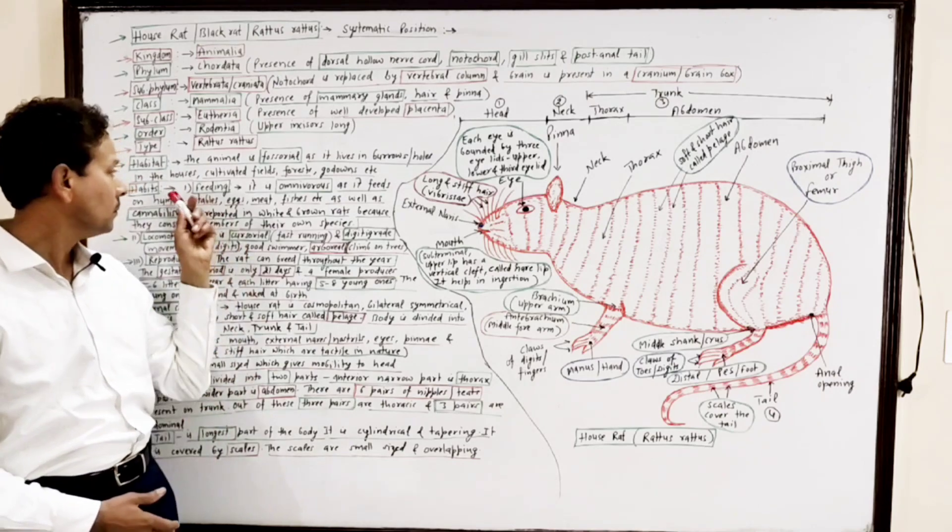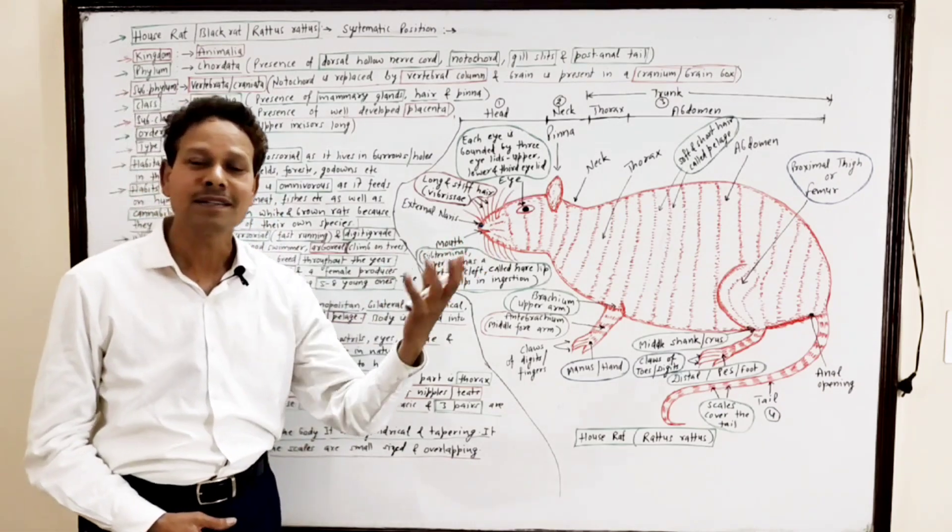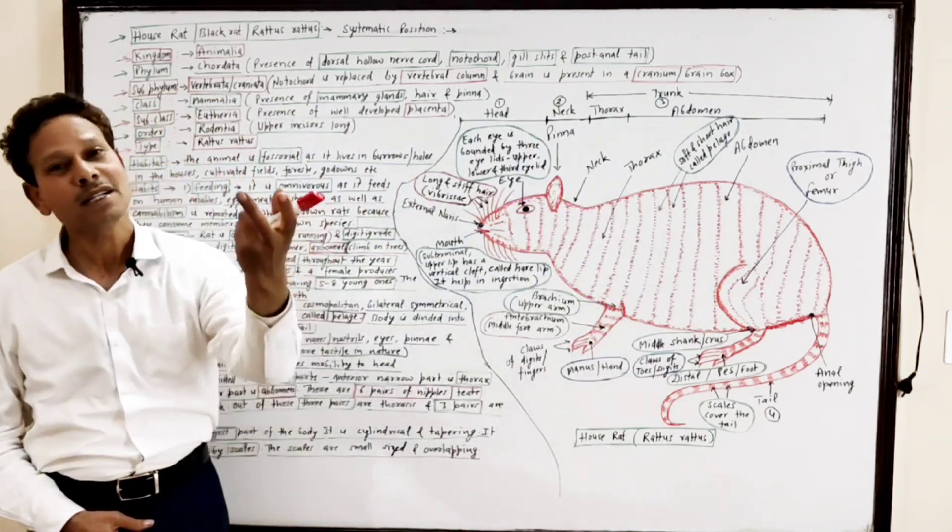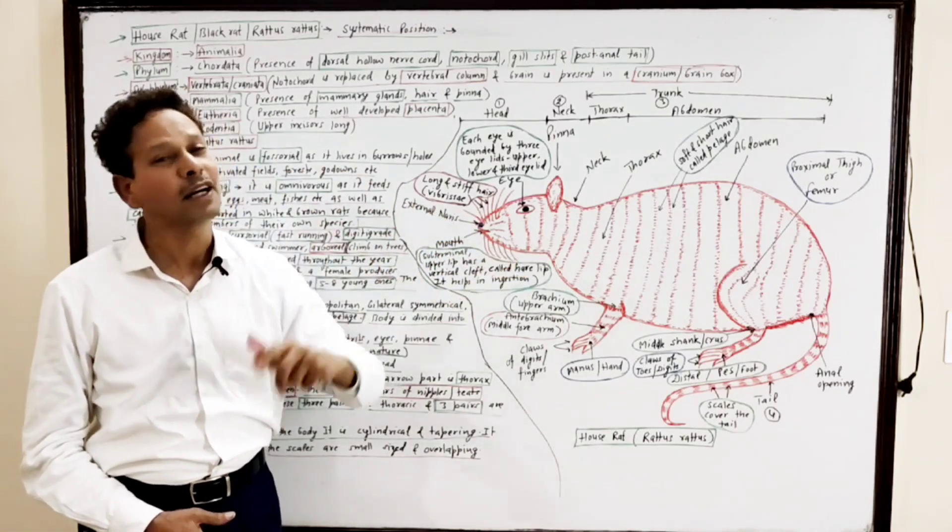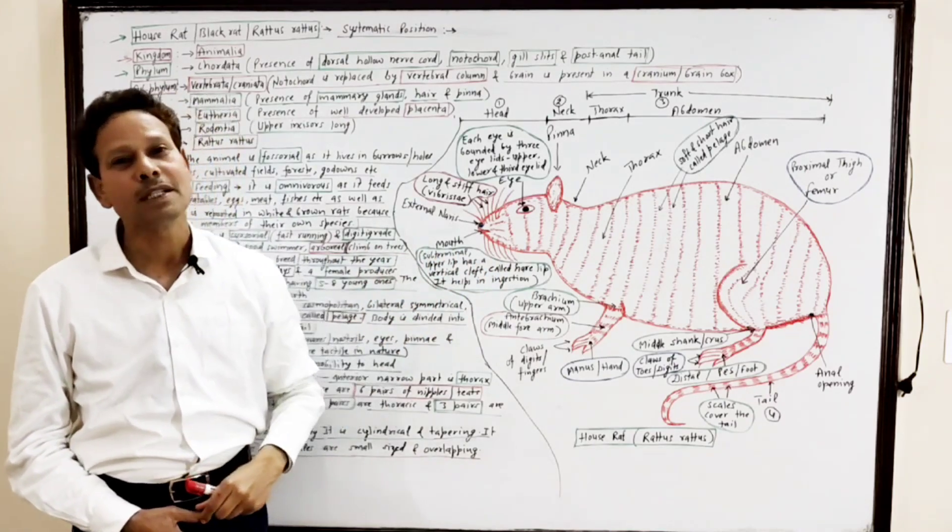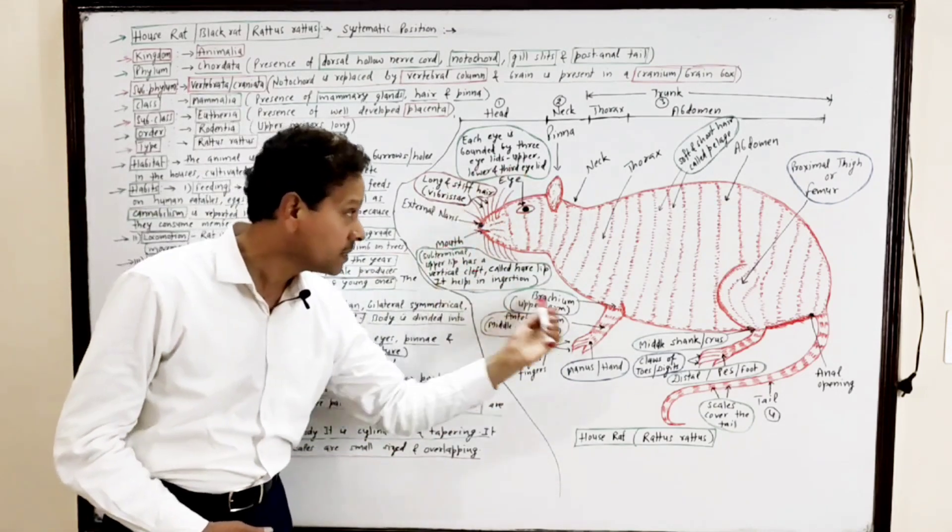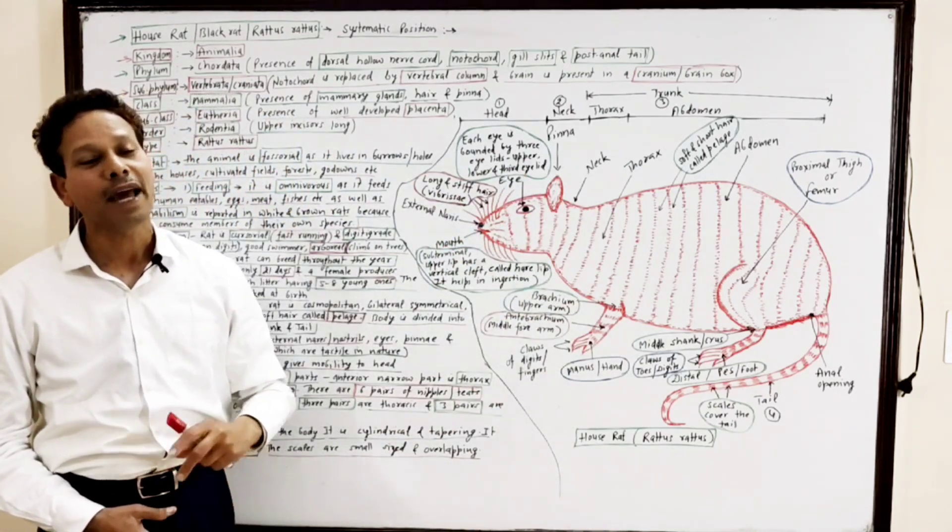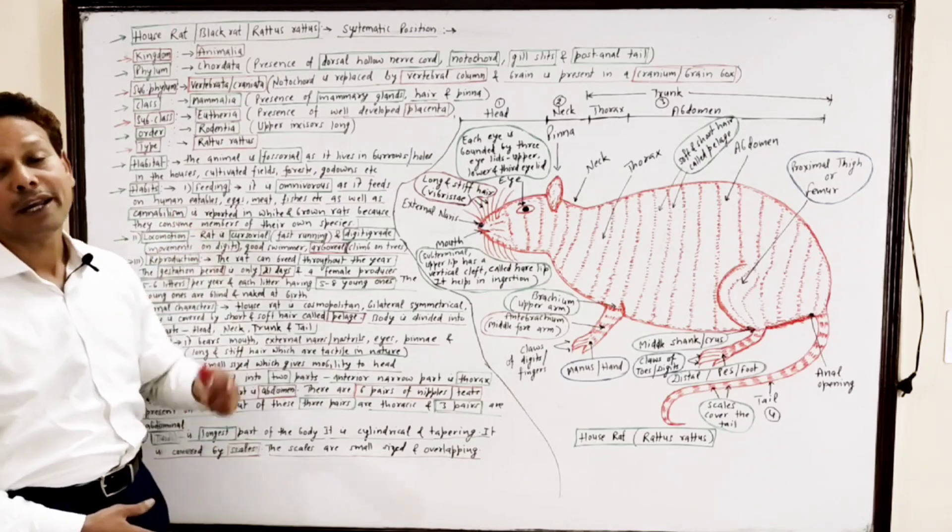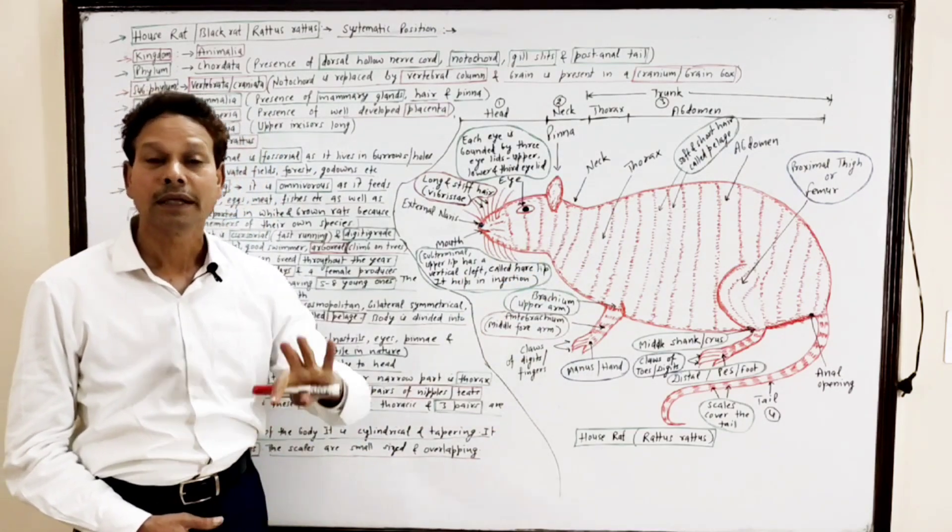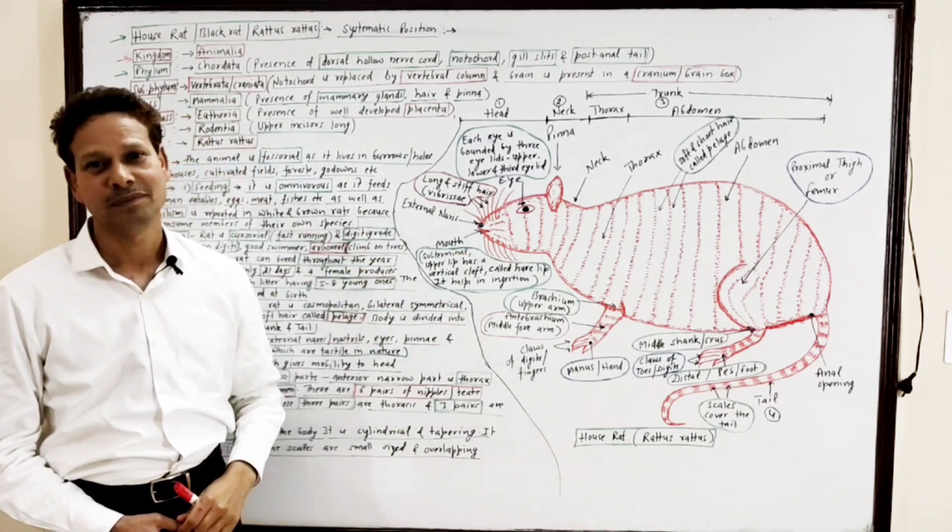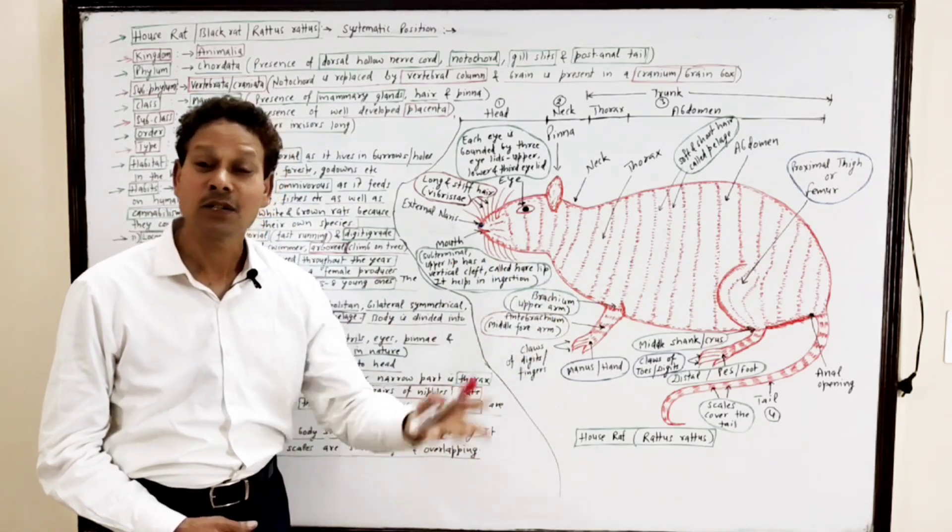Habits. Feeding: The animal is omnivorous. The rat consumes all types of food present in our kitchens. It consumes vegetables as well as fruits, eggs, meat, fishes. In rare cases, the animal shows cannibalism, meaning the animal consumes its own species.